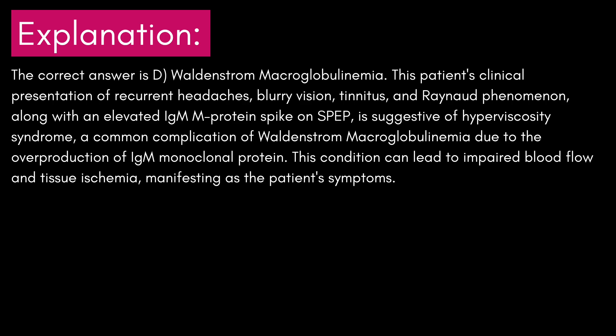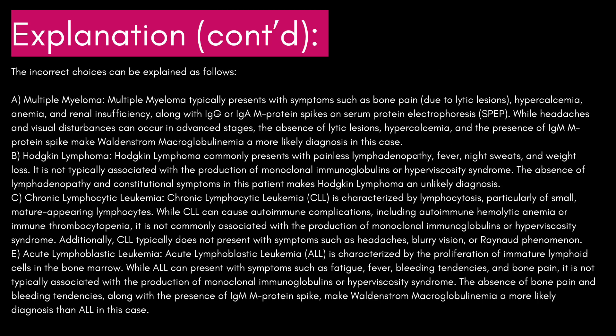Let's go ahead and see why the other answer choices are incorrect. A, multiple myeloma. Multiple myeloma typically presents with symptoms such as bone pain due to lytic lesions, hypercalcemia, anemia, and renal insufficiency, along with IgG or IgA M-protein spikes on SPEP. While headaches and visual disturbances can occur in advanced stages, the absence of lytic lesions, hypercalcemia, and the presence of an IgM M-protein spike make Waldenstrom macroglobulinemia a more likely diagnosis.